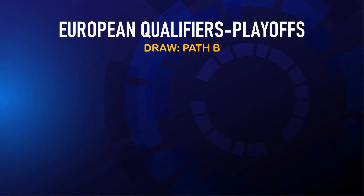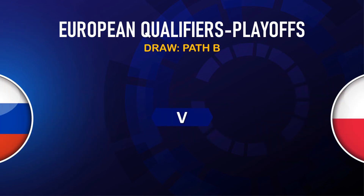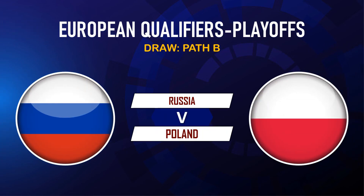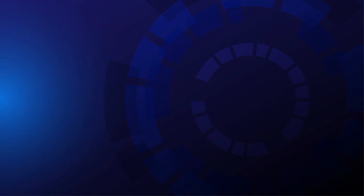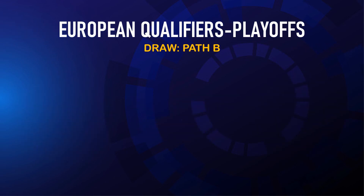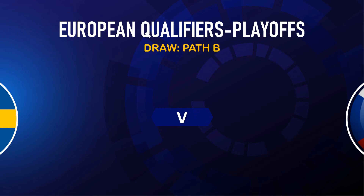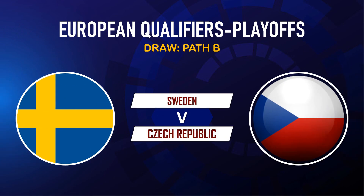Path B, 3rd semifinal: Russia vs Poland. Path B, 4th semifinal: Sweden vs Czech Republic.